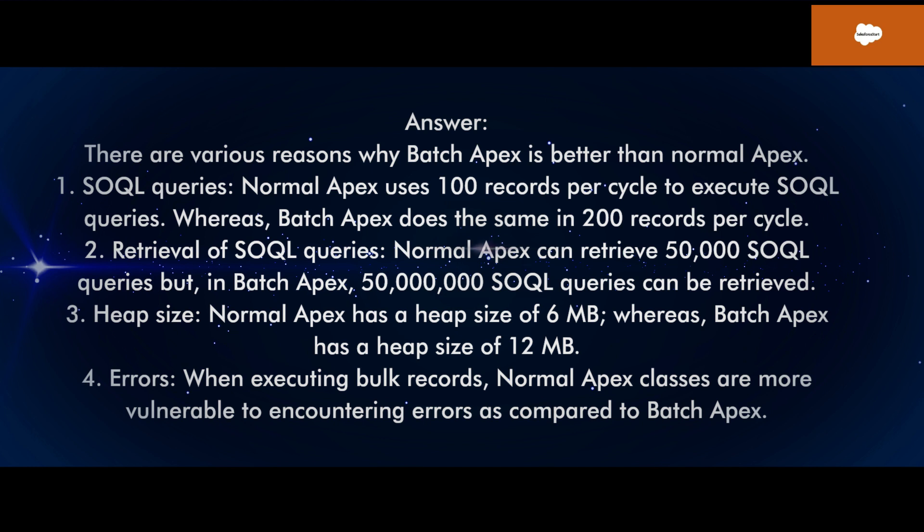3. Heap size: Normal Apex has a heap size of 6 megabytes, whereas batch Apex has a heap size of 12 megabytes. 4. Errors: When executing bulk records, normal Apex classes are more vulnerable to encountering errors as compared to batch Apex.